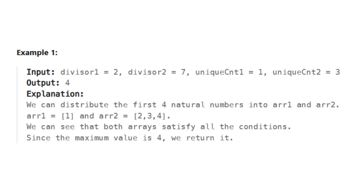For example, say divisor 1 is 2, divisor 2 is 7, unique CNT1 is 1, and unique CNT2 is 3. For A1, we can have the integer 1, since it's not divisible by 2. For A2, we can have 2, 3, and 4, since they are not divisible by 7. Here, the maximum integer is 4. Can we minimize this further?